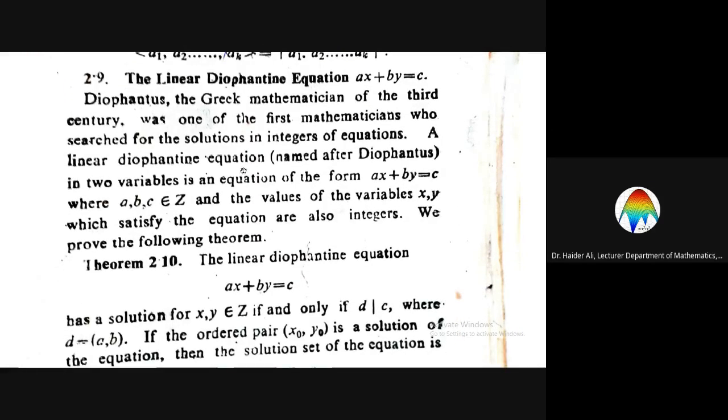A linear Diophantine equation, named after Diophantus, in two variables is an equation of the form ax plus by equals c, where a, b, c are integers. The values of the variables x and y which satisfy the equation are also integers. We are only interested in those values of x and y which are integers.